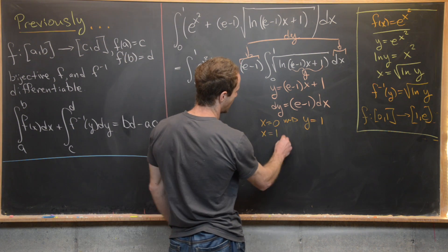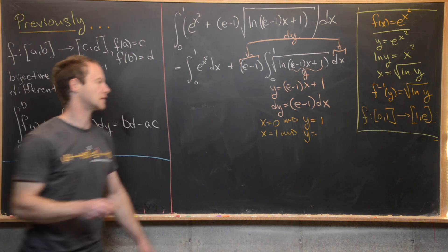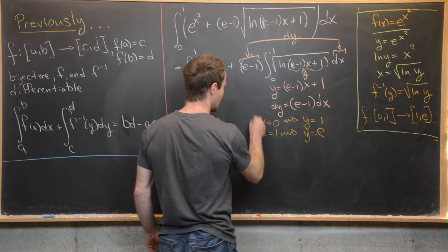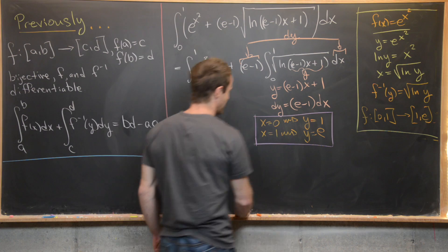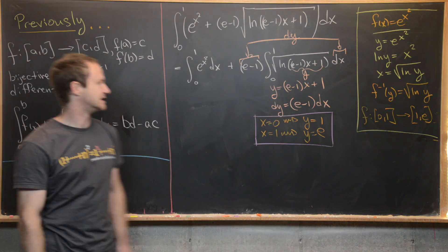And then if x equals 1, that's going to make y equal, well, it's (e minus 1) plus 1. So y is equal to e. So in other words, our bounds of integration have changed appropriately to apply this identity.